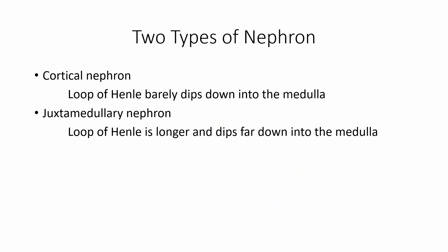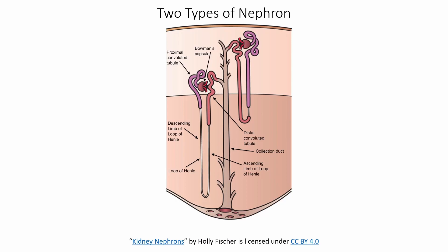Now there are two main types of nephrons: the cortical and the juxtamedullary nephrons. The main difference is the loop of Henle. With the cortical nephron, the loop of Henle barely gets down into the medulla — it's just kissing the medulla. Whereas the juxtamedullary nephron has a much longer loop of Henle, and it dips way down into the medulla before coming back up to the cortex. But both of these are going to be riding that line between cortex and medulla. You can see both of them riding between the two regions — the juxtamedullary dives down deep, while the cortical nephron is just barely touching that medulla.